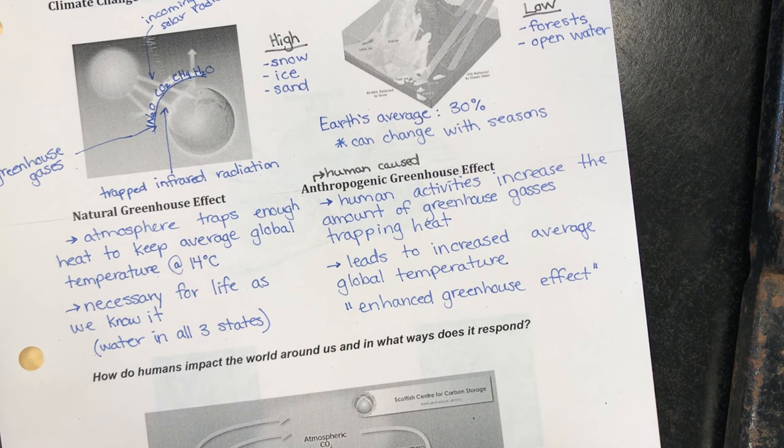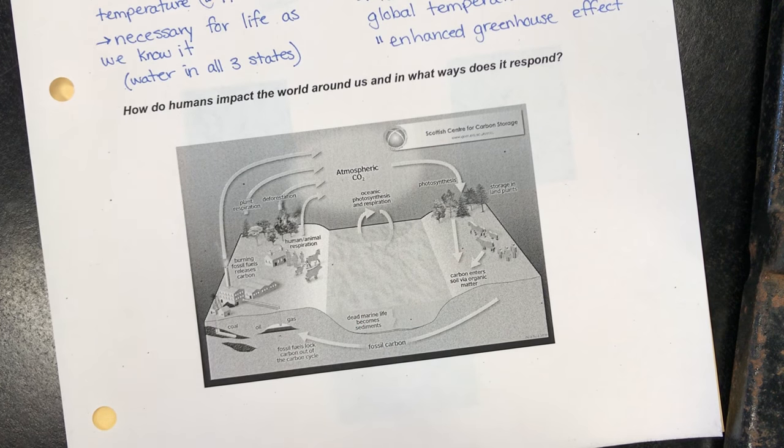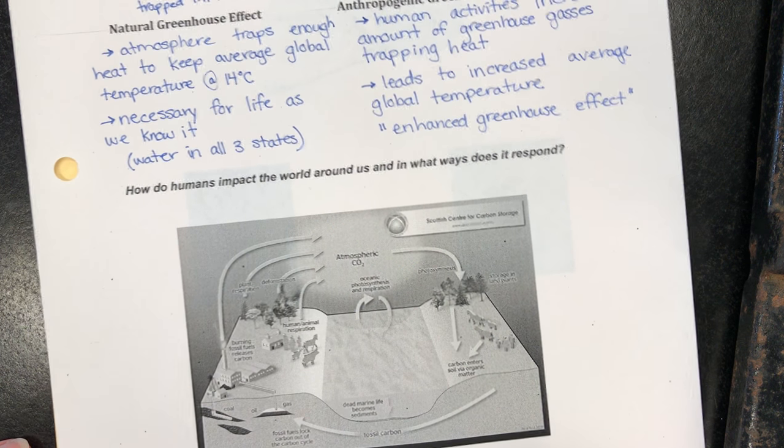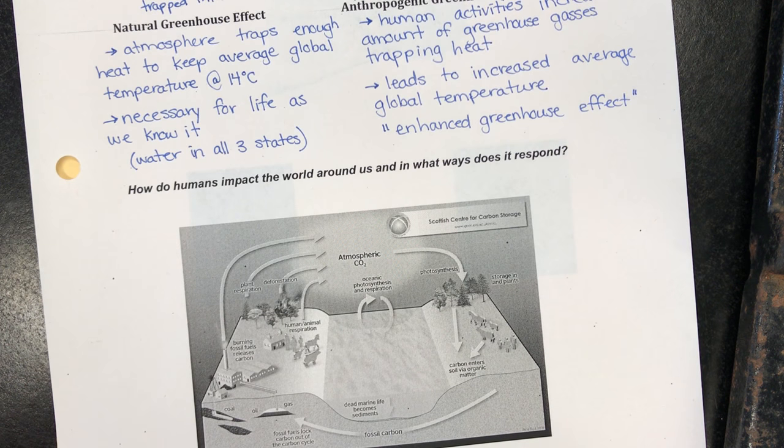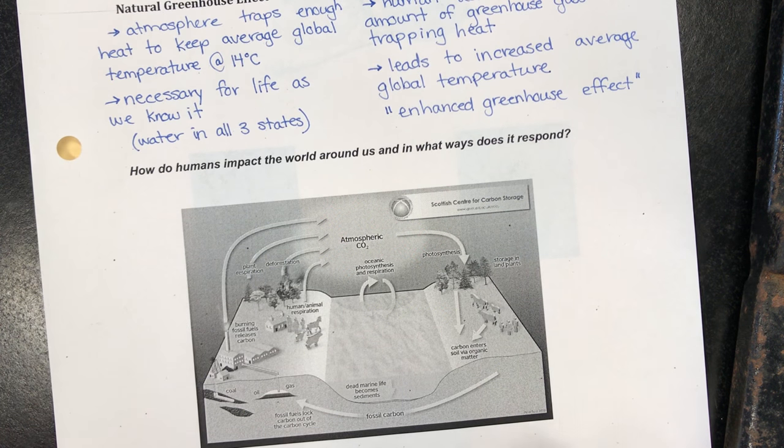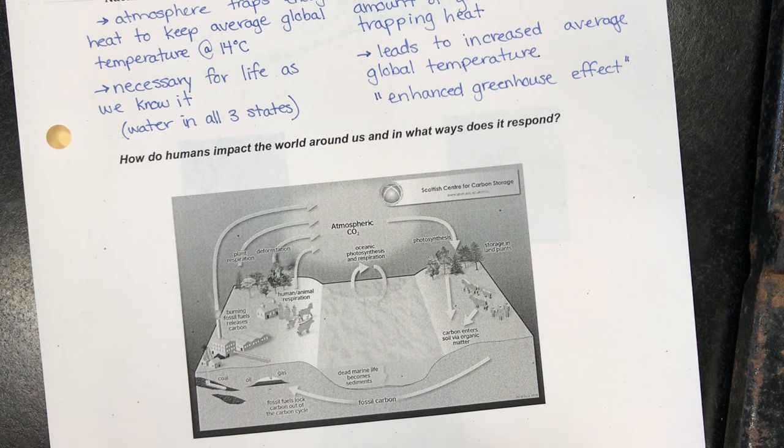Greenhouse gases and how the carbon cycle works to try and maintain a balance. So here we have things called carbon sources and carbon sinks. Carbon sources emit greenhouse gases and carbon sinks absorb them.